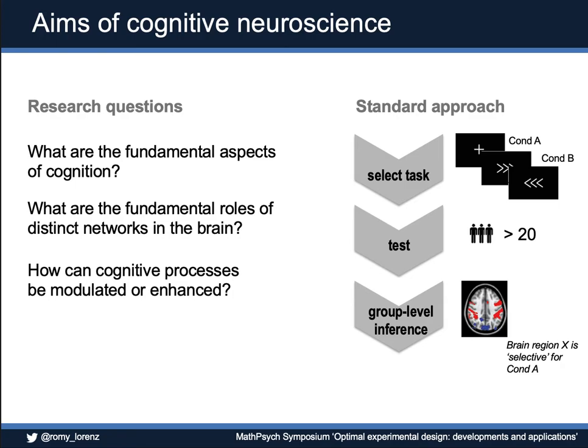What are cognitive neuroscientists actually interested in? We want to understand the fundamental aspects of cognition and the fundamental roles of distinct networks in the brain, and how we can even modulate or enhance those cognitive processes. However, the standard approach using functional magnetic resonance imaging, fMRI, is often that we are selecting a task or a few tasks with a really pre-selected and small set of study conditions.